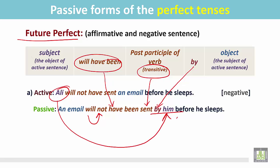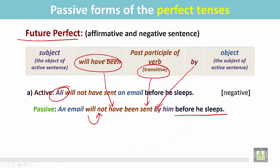The subject of the active sentence becomes the object in the passive — it is 'him,' or we can also write 'Ali.' The other part of the sentence, after the conjunction, contains another clause. The verb 'sleeps' has no object — it is an intransitive verb — so we cannot change this part of the sentence into a passive sentence.